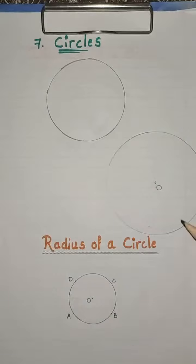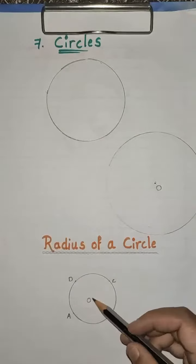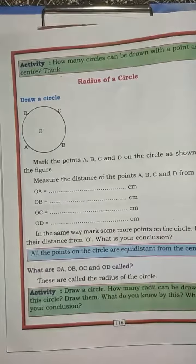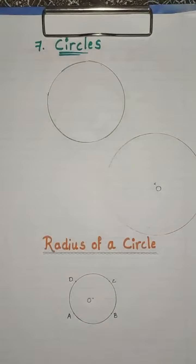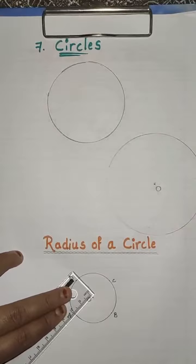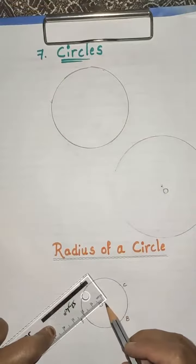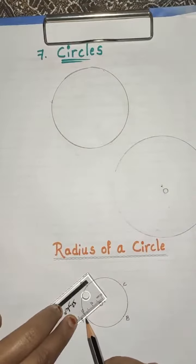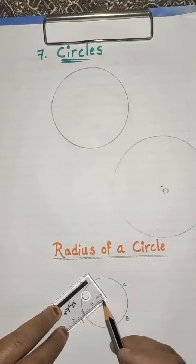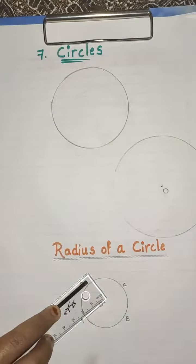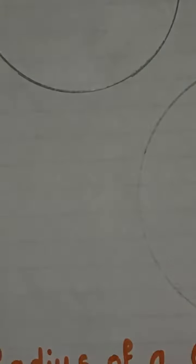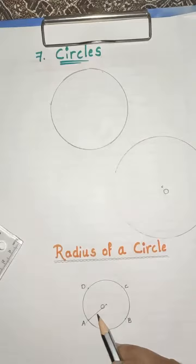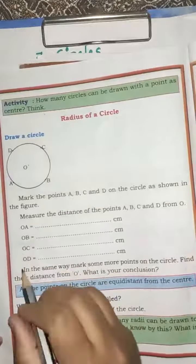Now let us measure the distance of points A, B, C and D from O. First we will measure OA. Here is OA. So here, how to place a scale — the point should be on the 0 on the scale. You have to start from 0. So let us draw one line. You can see it is 0, 1, 2 — so 2 centimeters. OA is equal to 2 centimeters.